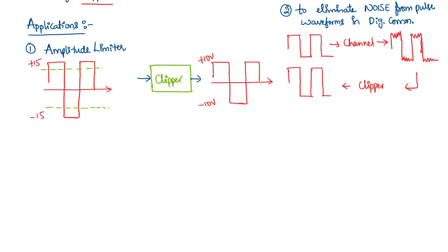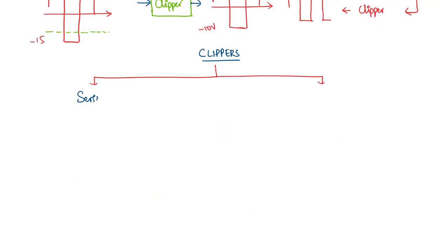Now coming to clippers, we have two kinds of clippers. One is series clippers and another one is shunt clippers. In fact, if you remember, the half wave rectifier itself is a kind of a series clipper. So let me take the circuit diagram here.